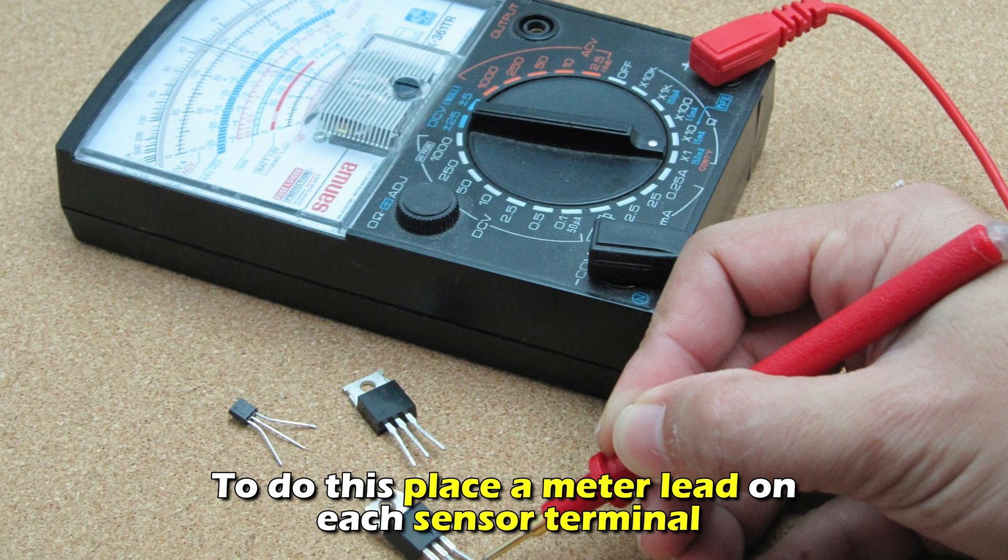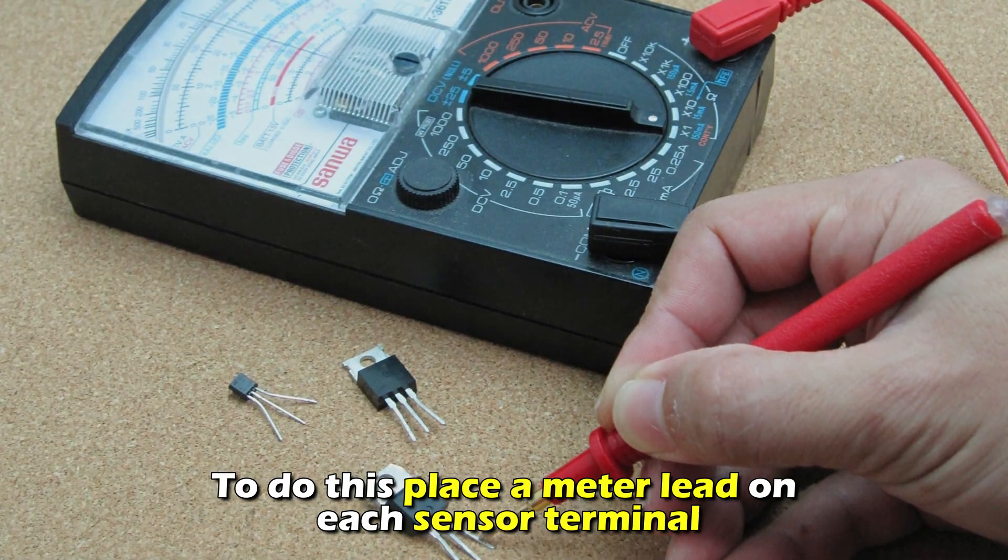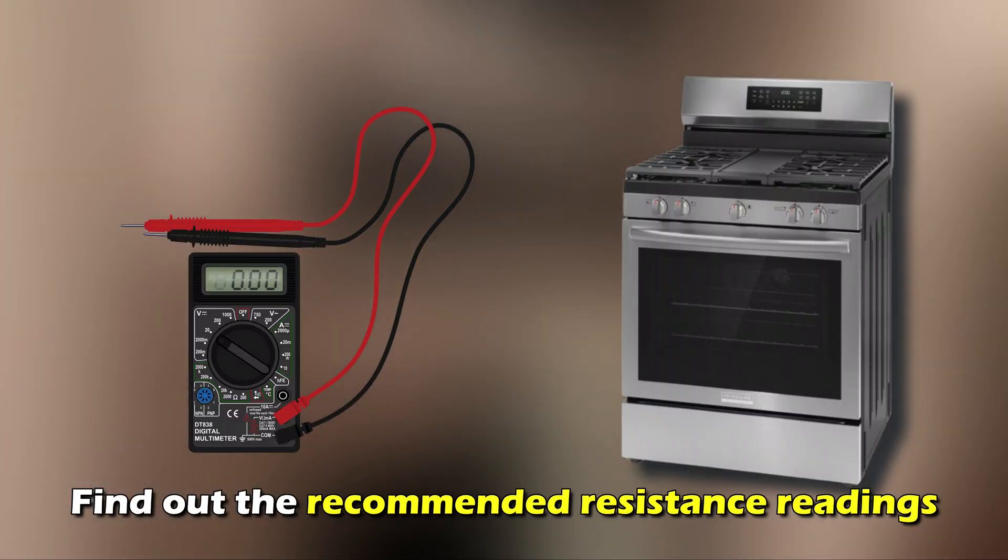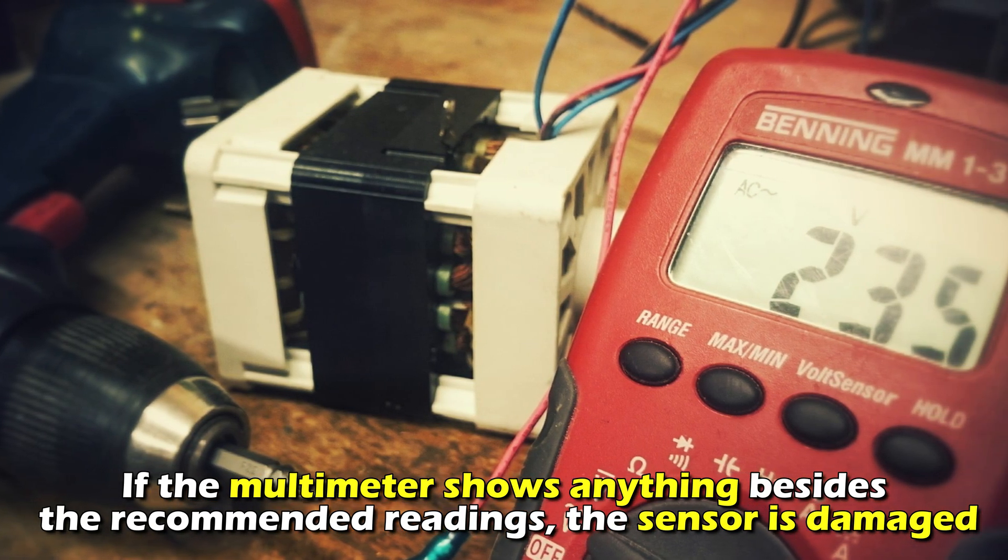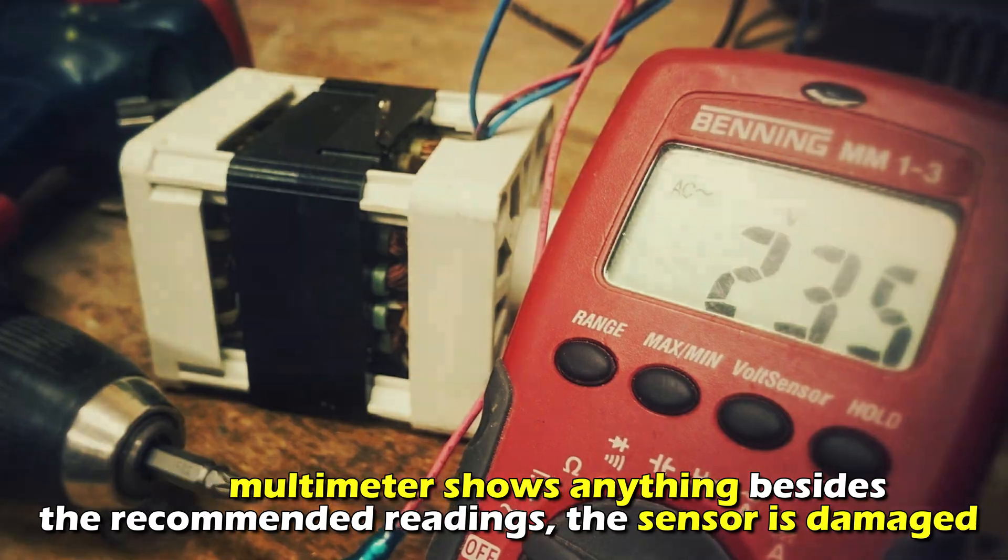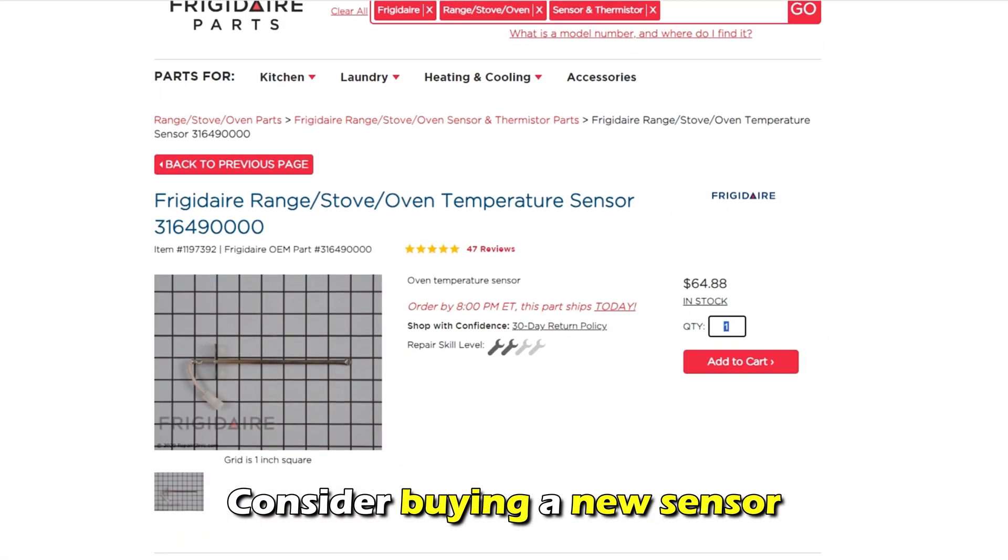Measure the resistance on the sensor using a multimeter. To do this, place the meter lead on each sensor terminal. Find out the recommended resistance readings. If the multimeter shows anything besides the recommended readings, the sensor is damaged. Consider buying a new sensor.